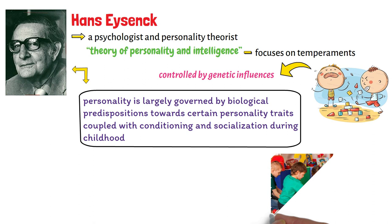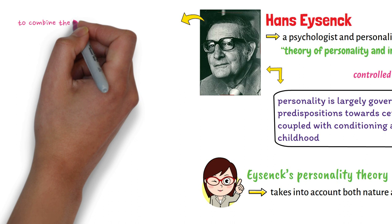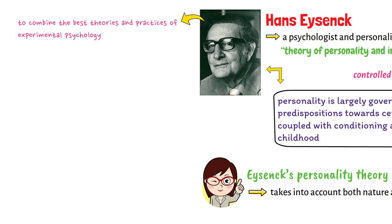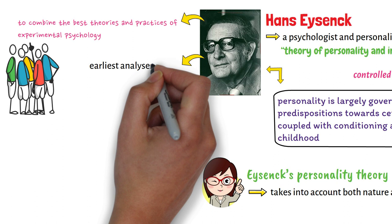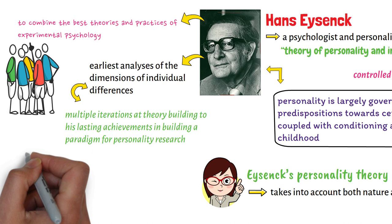As we can see, Eysenck's personality theory takes into account both nature and nurture. His goal was to combine the best theories and practices of experimental psychology with the measurement techniques of individual differences. From his earliest analyses of the dimensions of individual differences through multiple iterations of theory building, he left a legacy of broad and rigorous research.